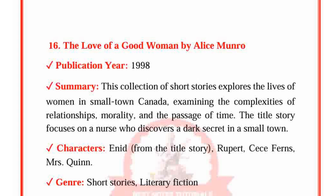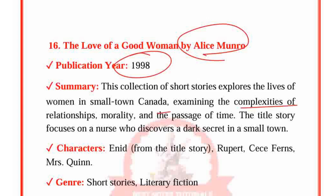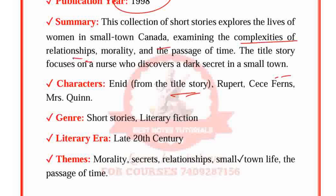The Love of a Good Woman by Alice Munro, published in 1998. This collection of short stories explores the lives of women in small-town Canada, examining the complexities of relationships, morality and the passage of time. The title story focuses on a nurse who discovers a dark secret in a small town. Characters from the title story: Rupert, Mrs. Quinn, Miss Fawcett. Genre: Short story, Literary fiction. Period: 20th century. Themes: Morality, Secret relationships, Small-town life and The passage of time.